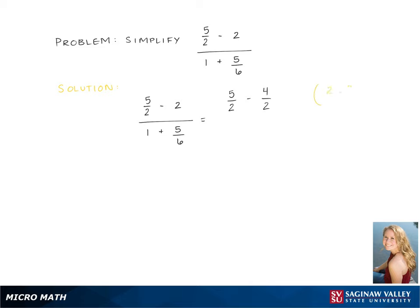Here we have 5 halves minus 2. 2 needs to have the denominator of 2 in order to subtract these two, so we take 2 and multiply it by 2 over 2. This gives us 4 halves.